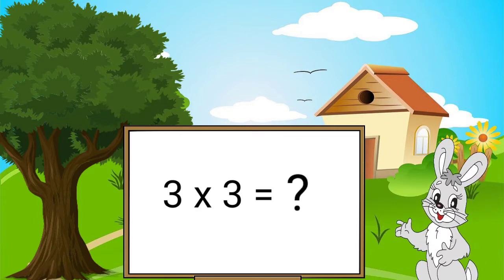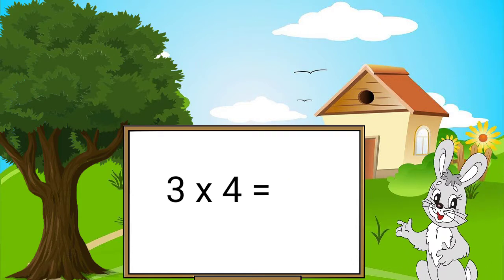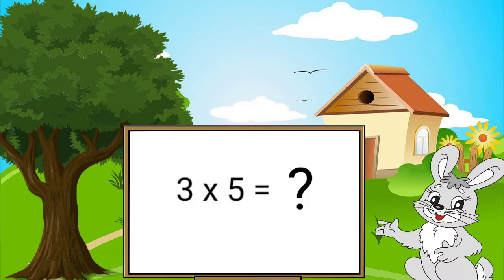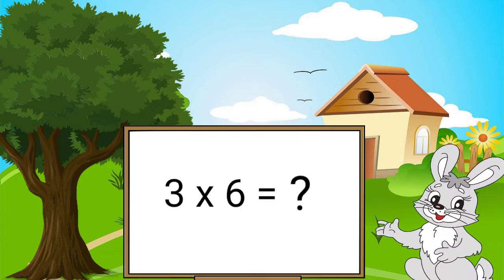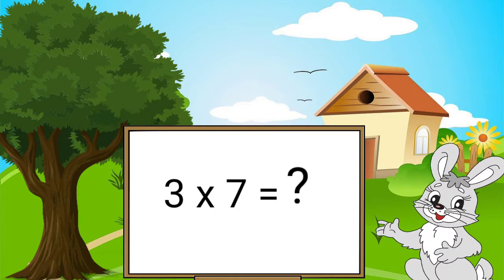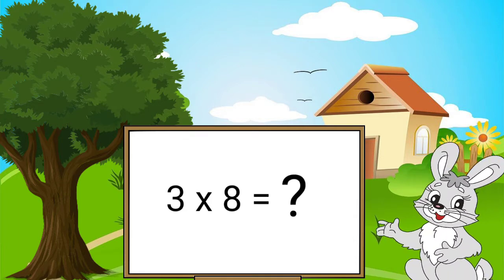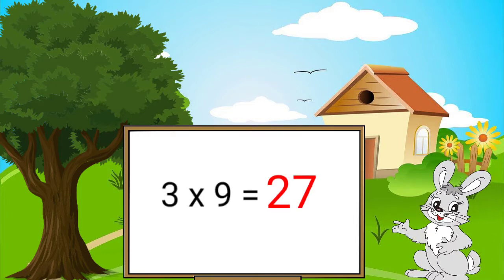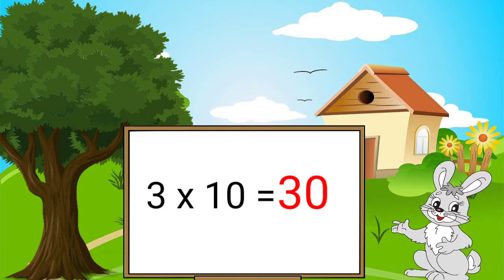Three ones are three. Three twos are six. Three threes are nine. Three fours are twelve. Three fives are fifteen. Three sixes are eighteen. Three sevens are twenty-one. Three eights are twenty-four. Three nines are twenty-seven. Three tens are thirty.